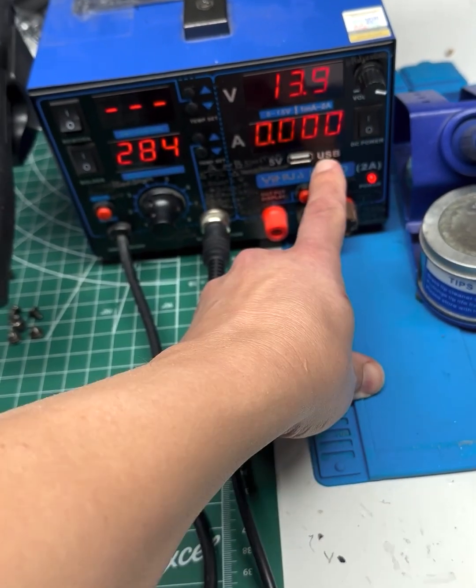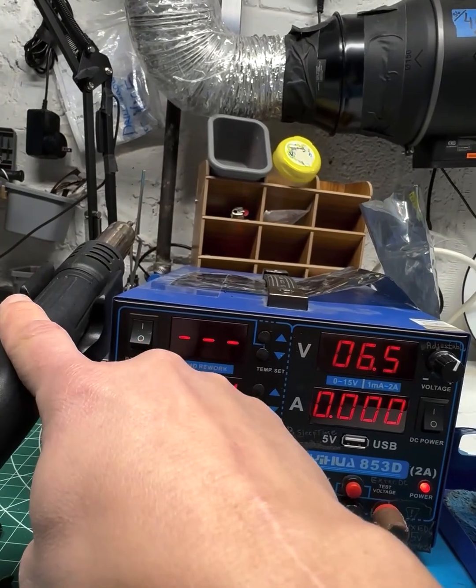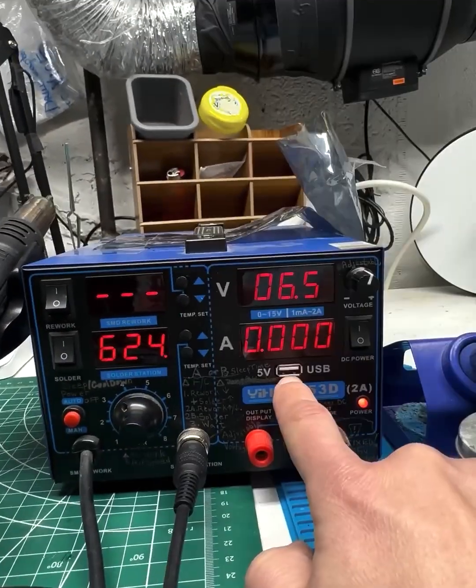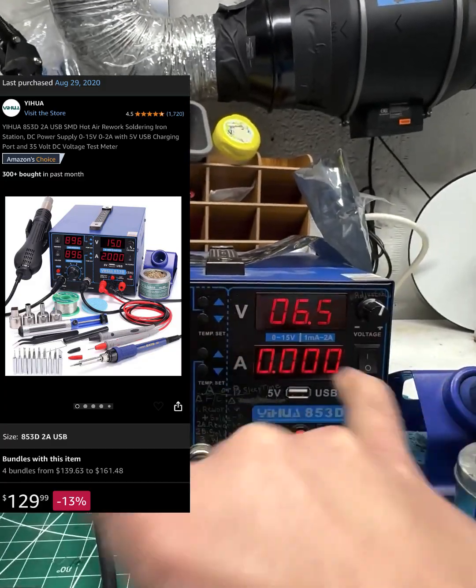YIHUA 853D USB. It has a sleep for your solder and it has the auto off for this. So two big safety features. Don't skimp on the USB model thinking it's just about the USB because what's more important is it's got safety stuff.